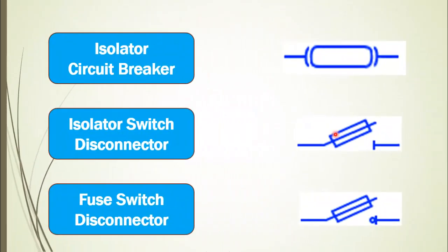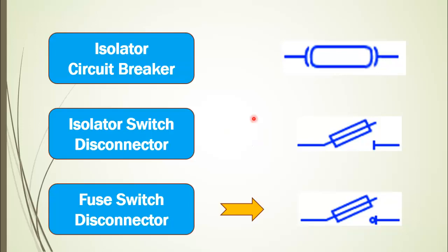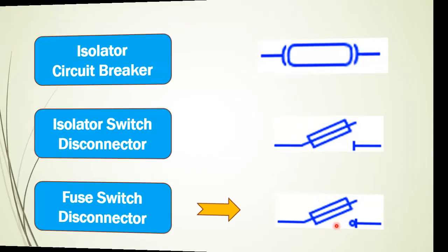I have also included the symbols for the isolated type switch disconnectors. First is the isolated circuit breaker, which contains both a circuit breaker and a disconnector. Next is the isolated switch disconnector, and the last one is the fuse switch disconnector, which contains the fuse assembly along with the disconnector switch.